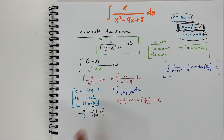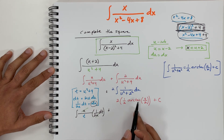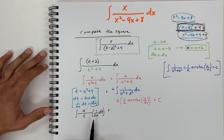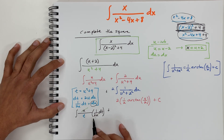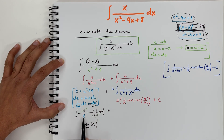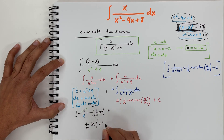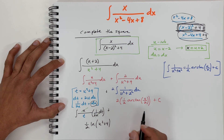That looks like a natural log. So the first integral gives us 1 half times ln of t, and since t is u squared plus 4, we write 1 half ln of |u squared plus 4|.